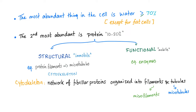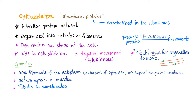Definition of the cytoskeleton: a network of fibrillar proteins, organized into filaments known as microfilaments, and tubules known as microtubules. Cytoskeleton is a structural protein — a fibrillar protein network, synthesized in the ribosome because it's a protein, organized into tubules or filaments. It will determine the shape of the cell. They form by the process of polymerization, from monomers into polymers.